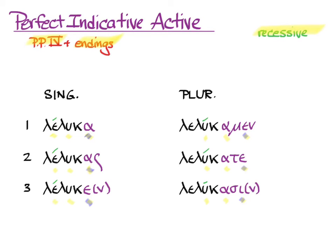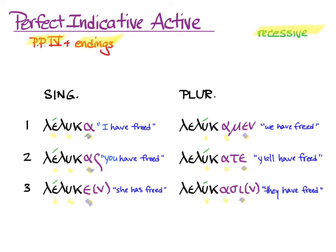That's the whole conjugation. λέλυκα, I have freed. λέλυκας, you have freed. λέλυκεν, she has freed. λελύκαμεν, we have freed. λελύκατε, y'all have freed. And λελύκασι, they have freed.